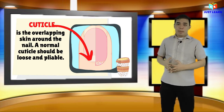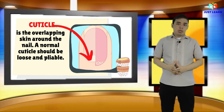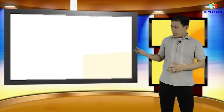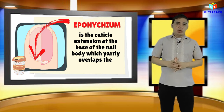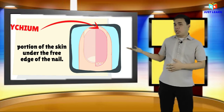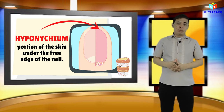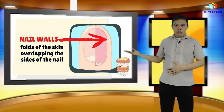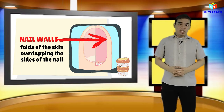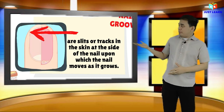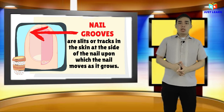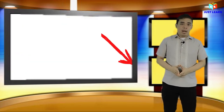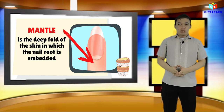The cuticle is the overlapping skin around the nail. A normal cuticle should be soft and pliable. Next is the eponychium — this is the cuticle extension at the base of the nail body which partly overlaps the lunula. The third is the hyponychium — the portion of the skin under the free edge of the nail. We also have nail walls — the folds of skin overlapping the sides of the nail. We also have nail grooves — these are the slits or tracks in the skin at the side of the nail upon which the nail moves as it grows. And lastly, we have the mantle — it is the pocket-like skin in which the nail is embedded. And that is the structure of the nails.